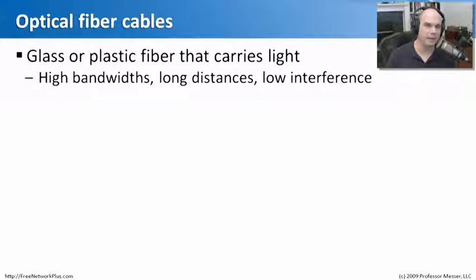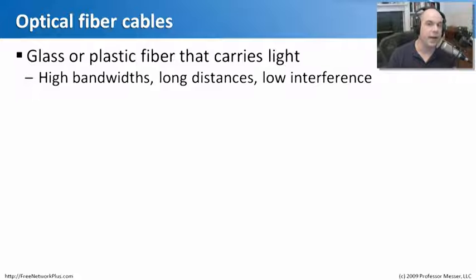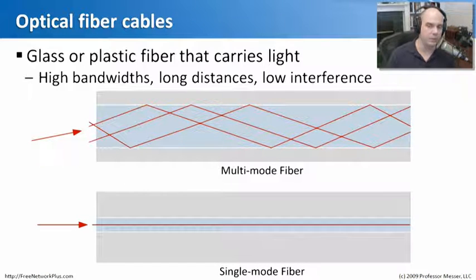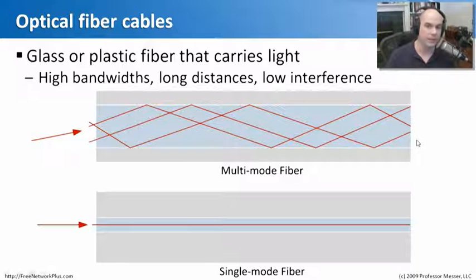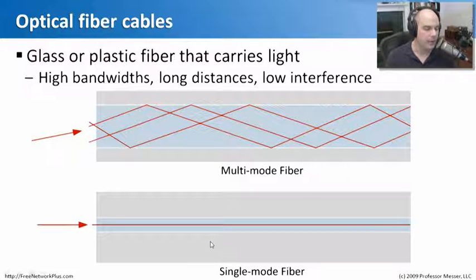Most networks have a combination of copper cables and optical fiber cables. Optical fiber cables are unique because they don't carry an electrical signal — they carry light from one end to the other. This allows very long distances at very high bandwidths with very little interference. There are two types of fiber: multi-mode fiber and single-mode fiber. Multi-mode fiber allows light to bounce around in different modes until it gets to the other side. Multi-mode fibers usually go over shorter distances and don't require as powerful lights or lasers to send the traffic through.